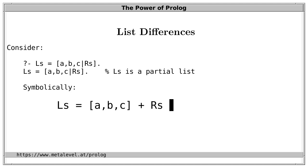Symbolically, we can say that LS is the list A, B, C plus RS. I say symbolically because plus here doesn't mean plus in an arithmetic sense, but rather that LS is the concatenation of the list A, B, C and RS. In Prolog, another way to state this is that the relation append holds between the list A, B, C, RS and LS.